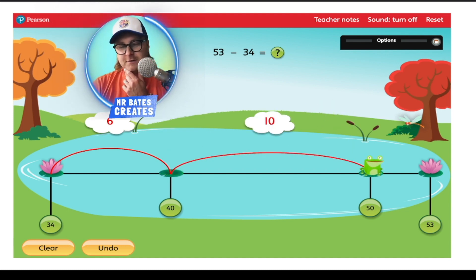Now, 50 to 53. That's easy, because we can work out 50 to 53 just by counting up. 50, 51, 52, 53. Well, that's a jump of 3. There we go.